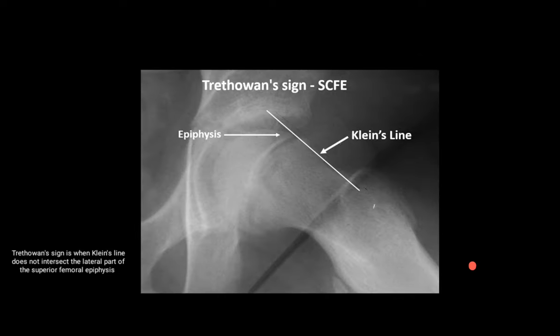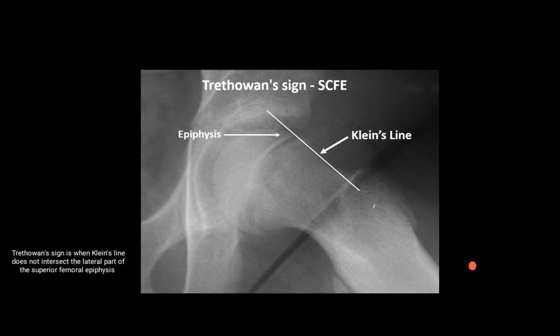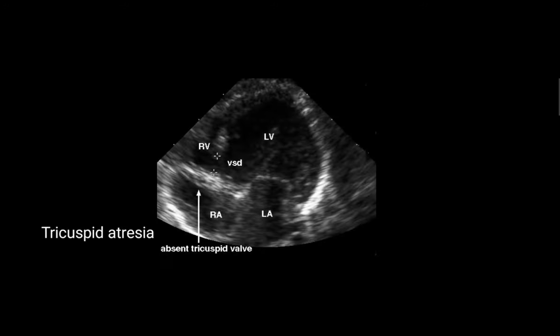The next image is of SCFE — slipped capital femoral epiphysis. It is an orthopedic condition and the classic sign seen in it is Trethowan's sign. In Trethowan's sign, Klein's line does not intersect the lateral part of the superior femoral epiphysis.